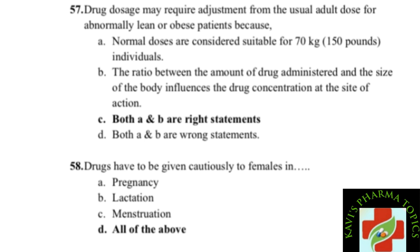Drug doses may require adjustment from the usual adult dose for abnormally lean or obese patients. Normal doses are considered suitable for a 70 kg or 150 pound individual. The ratio between the amount of drug administered and the size of the body influences the drug concentration at the site of action.